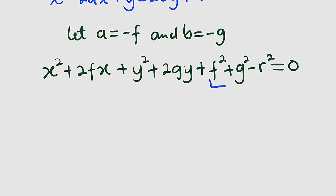Now let me substitute for the last time because all of these are constants. I would like to let them to be equal to c. So let c be equal to f squared plus g squared minus r squared.